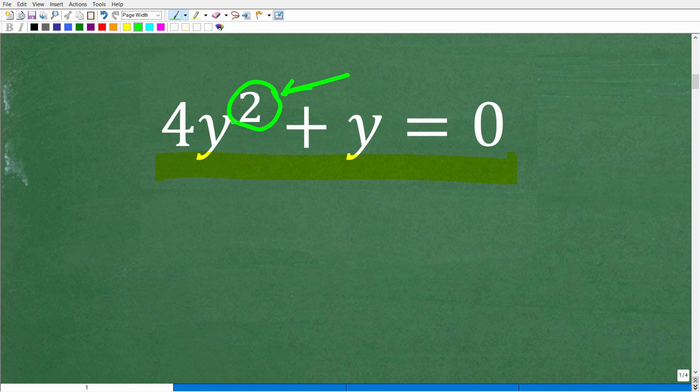Okay, so y squared and y, these things right here, this is a term of a polynomial. And so is this. Now, the highest degree is the highest power of this polynomial.